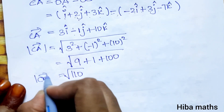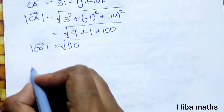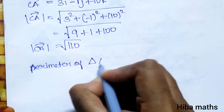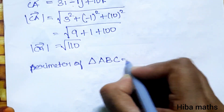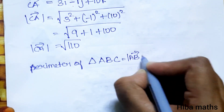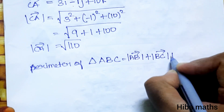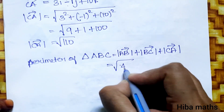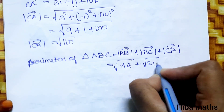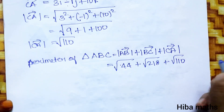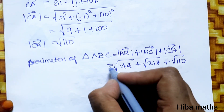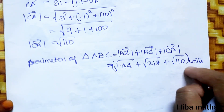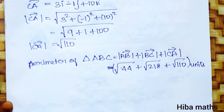The perimeter of triangle ABC equals modulus of AB vector plus modulus of BC vector plus modulus of CA vector. Substituting the values, the perimeter equals root of 44 plus root of 218 plus root of 110 units. These cannot be simplified further, so this is the final answer.